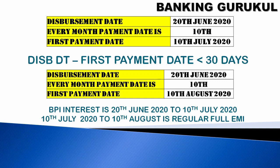Now the disbursement date is 20th June and the first payment date is 10th August. If you compare the days between 20th June and 10th August, it is more than 30 days. The actual EMI period is 10th July to 10th August. So the BPI is the interest from 20th June to 10th July — that is your broken period interest — and 10th July to 10th August is your regular EMI.